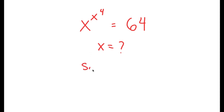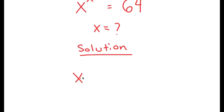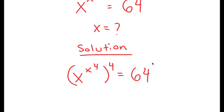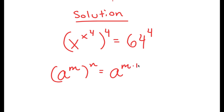For my solution, I'm going to first start by taking the power of 4 on both sides. So I get x to the power of x to the power of 4, to the power of 4, is equal to 64 to the power of 4. Now, if I have something in the form a to the power of m to the power of n, this is equal to a to the power of m times n.